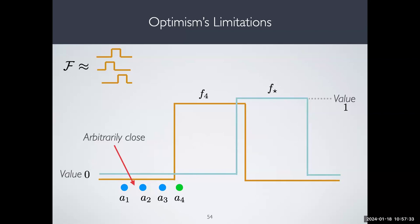Optimism has its limitations. Consider a simple threshold class: an optimistic algorithm can actually take an infinite number of queries to learn it, because optimism may not use the geometry of this class very well. So optimistic algorithms are not the end-all for bandits.